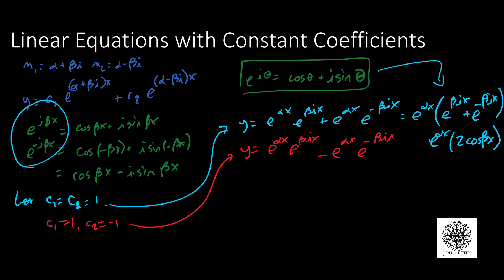On the other hand, for my red equation I get e to the alpha x times e to the beta ix minus e to the negative beta ix, and when I do that, this time the cosines subtract out and I end up with 2i sine beta x.